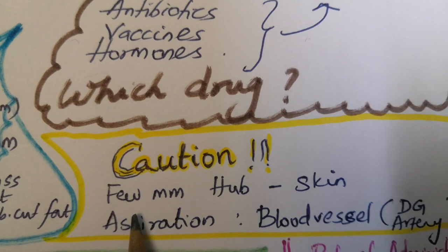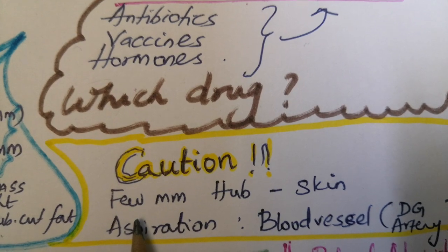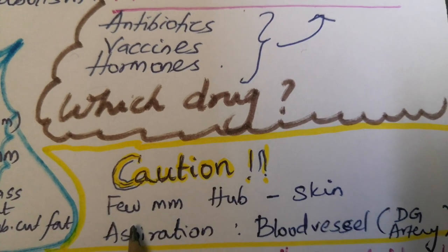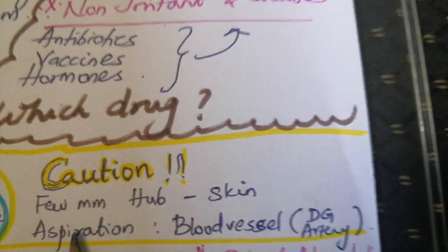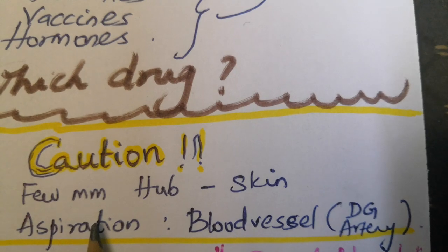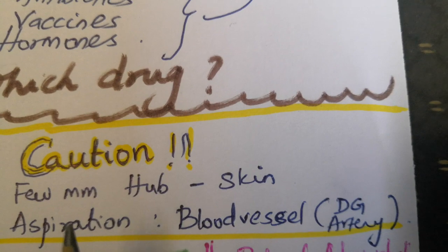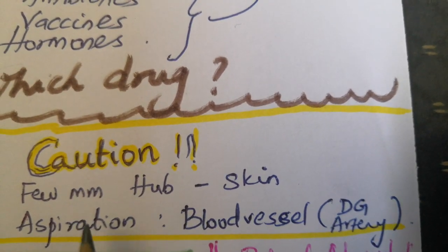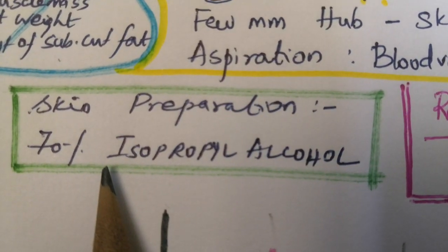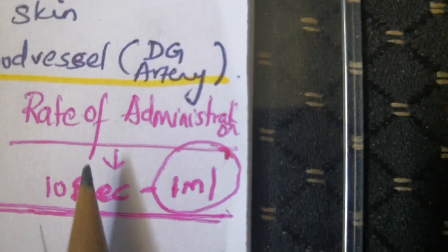Before giving an intramuscular injection, leave a certain gap between the hub of the needle and the skin so that if it breaks, retrieval is easy. Aspiration is very important, especially in the dorsogluteal region, because the dorsogluteal artery runs there — to prevent intravascular injection. Prepare the skin with 70% isopropyl alcohol.